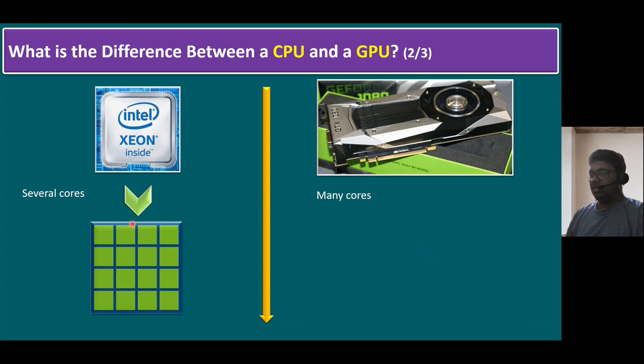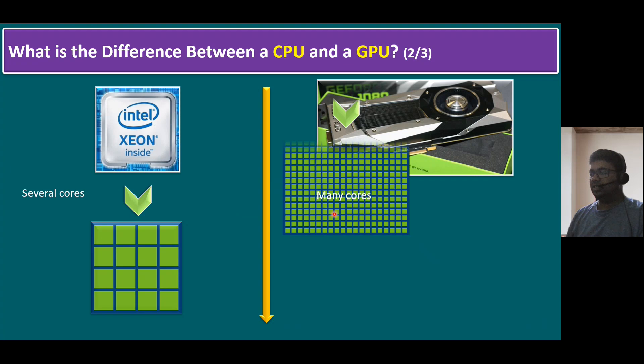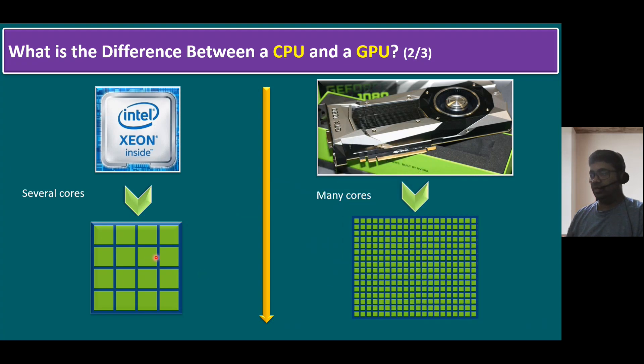For example, in this diagram, I took the example of several cores. Let's say one green color box is represented as one core. If you count here, each row we have four cores, and totally we have four rows. That means four multiplied by four, it's a 16-core processor. When compared with GPU, it comes with so many cores, not just 16-core or 32-core.